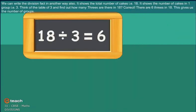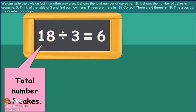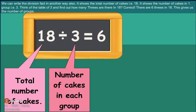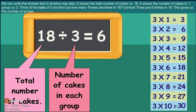We can write the division fact in another way also. It shows total number of cakes. It shows number of cakes in one group. Think the table of 3 and find how many 3s are there in 18. Correct! This shows the number of groups.